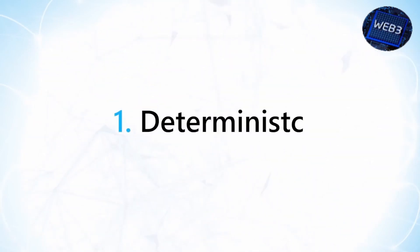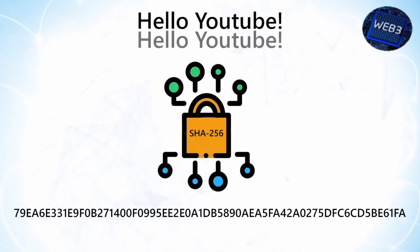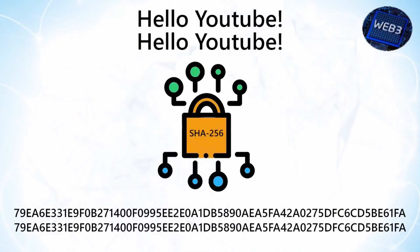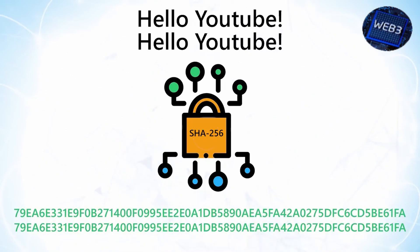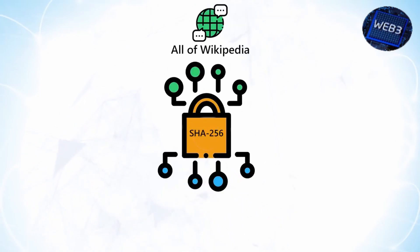Property 1 – Deterministic. This means that no matter how many times you input the same data, you will always get the same result. This is critical because if you get different hashes every time, it's impossible to keep track of the input.